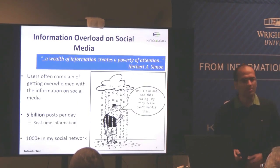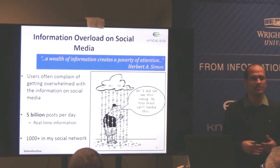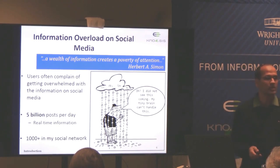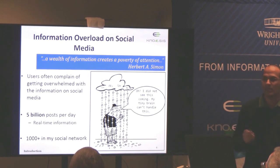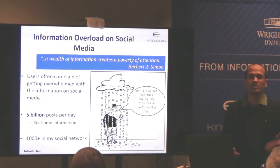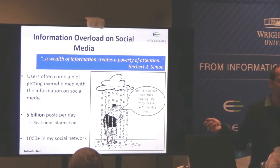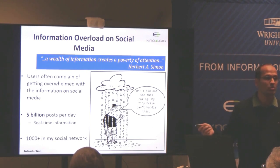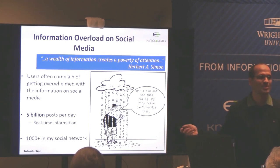One common problem is that it's really hard to follow each and every piece of information we get on social media. A great quote by Simon says: 'A wealth of information creates a poverty of attention.' The more information we have, the less attentive we can be to all of it. Users often complain about information overload. There are five billion posts generated just on Twitter and Facebook per day. Personally, I have a thousand-plus people across LinkedIn, Facebook, and Twitter, and keeping track of everyone is not easy.